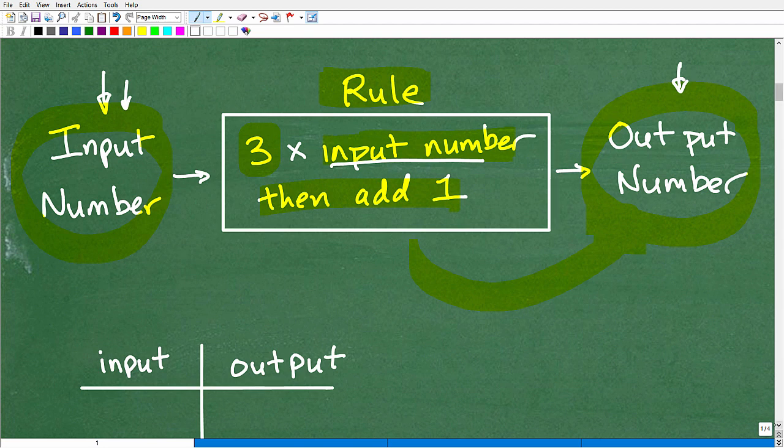So every input number will have a unique specific output number. Okay. So let's go ahead and do an example and let's use two as our first number, our first input number. So let's go ahead and figure out the output number. I can't figure out the output number yet because I got to run this input number into my little function rule.